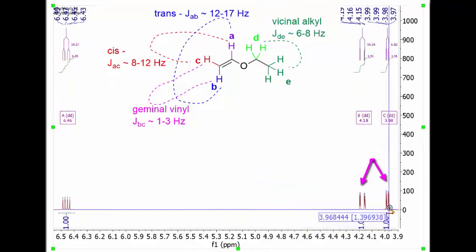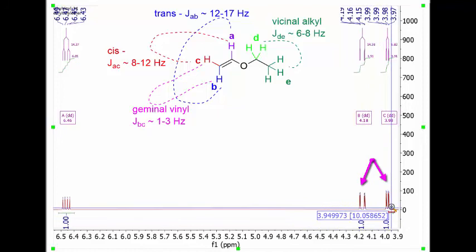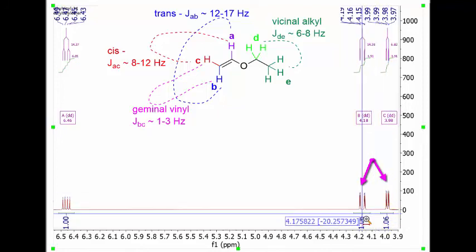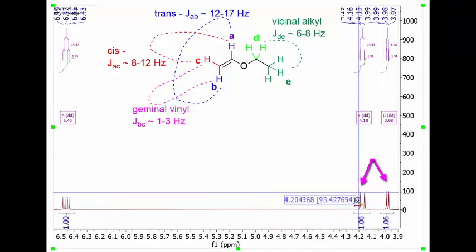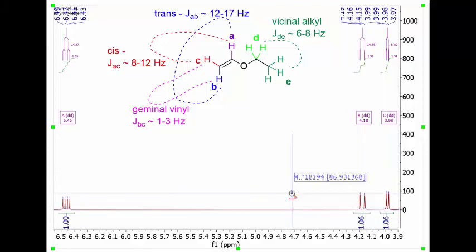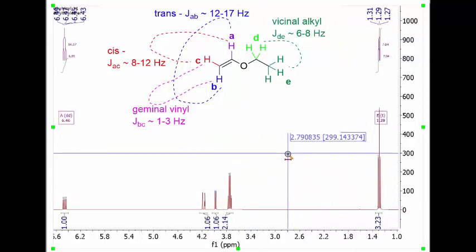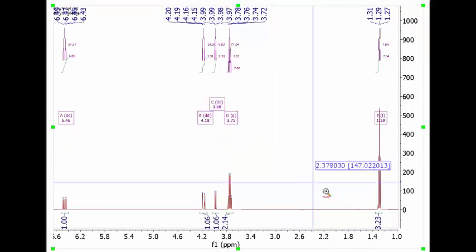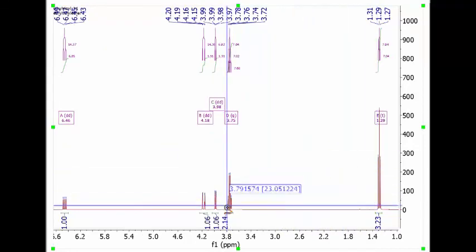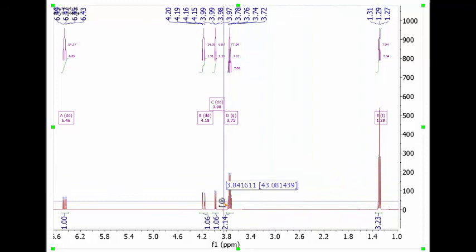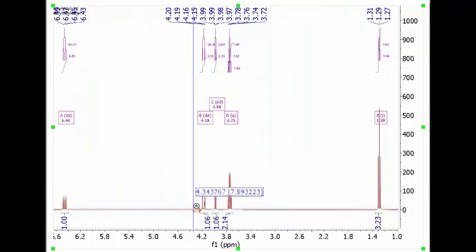And then of course, these two share a small coupling, and in this particular case, that corresponds to a geminal vinyl. So these two are bound to the same carbon, and it is an sp2-style carbon. Therefore, we can go ahead and confidently assign every peak in the molecule, some on the basis of chemical shift and integration, and others strictly on the basis of the J values that they experience.